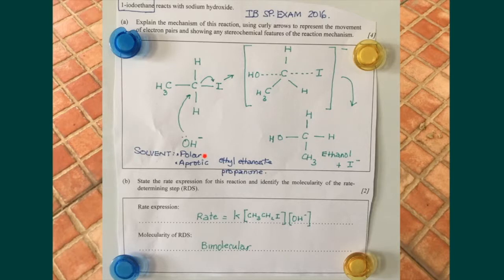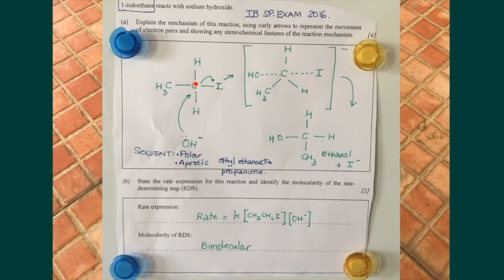We should also note that the solvent for this reaction must be polar because you have charged species involved. More significantly, we need an aprotic solvent to allow the OH to be in a naked state and free to attack. A protic solvent would form hydrogen bonds to the OH and reduce its ability to attack the partially positive carbon and allow for the exit of the iodine. Good examples of aprotic solvents are ethyl ethanoate and propanone.